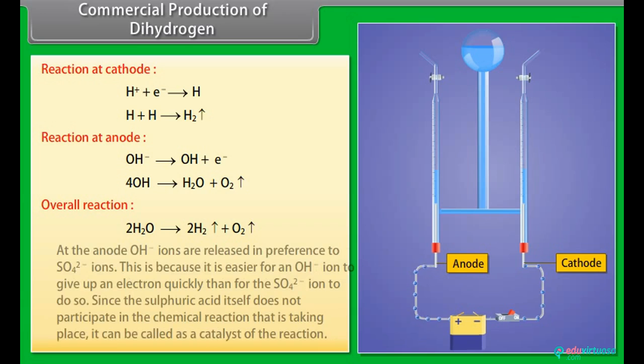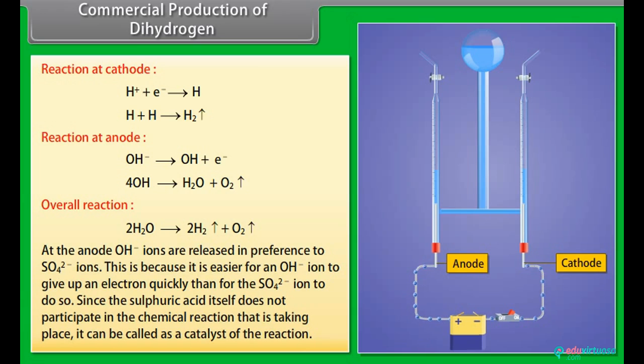At the anode, OH- ions are released in preference to SO4 2- ions. This is because it is easier for an OH- ion to give up an electron quickly than for the SO4 2- ion to do so. Since the sulphuric acid itself does not participate in the chemical reaction that is taking place, it can be called as a catalyst of the reaction.